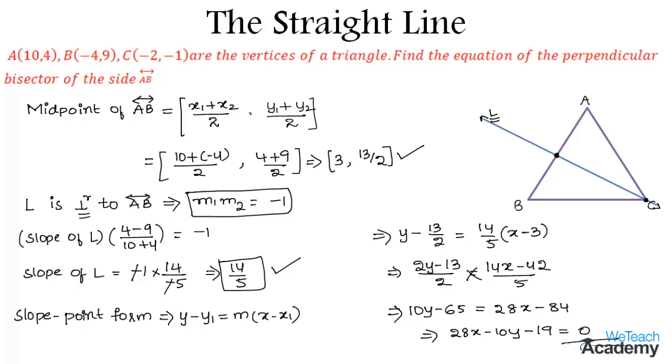This is the equation of the perpendicular bisector of side AB, that is line L. This is how we find the equations of straight lines.